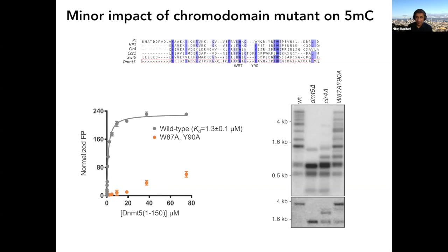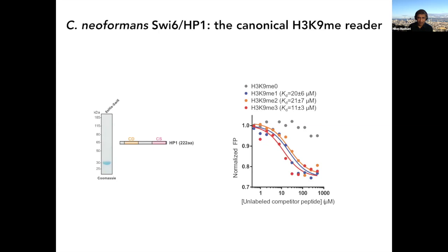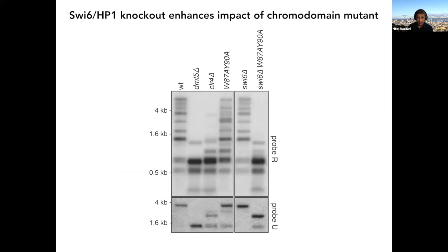That led us to think another reader was involved — HP1 being the obvious candidate. We expressed HP1 in bacteria and showed it also binds H3K9 methylated peptides, with slightly weaker KDs. Knocking out HP1 alone showed really no phenotype, but combining the HP1 knockout with the chromodomain mutation in DNMT5 gave a considerably stronger phenotype — basically identical to eliminating H3K9 methylation completely.